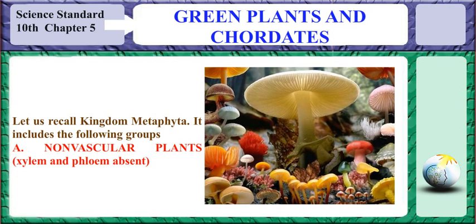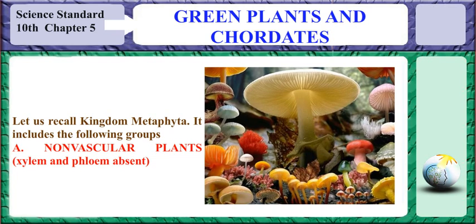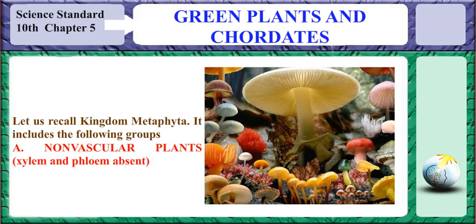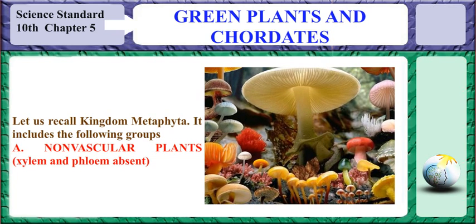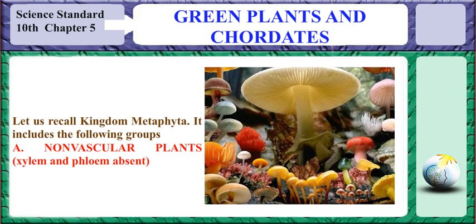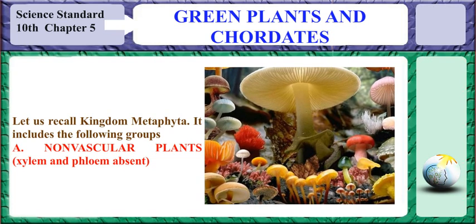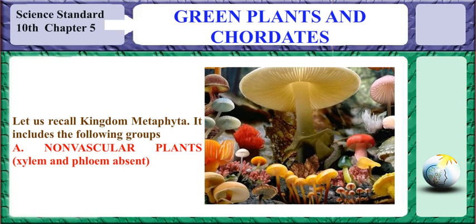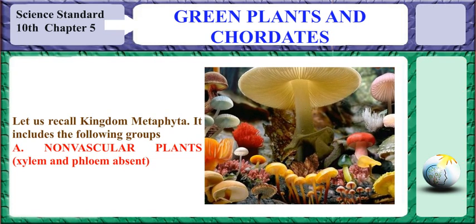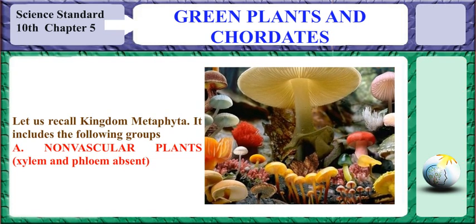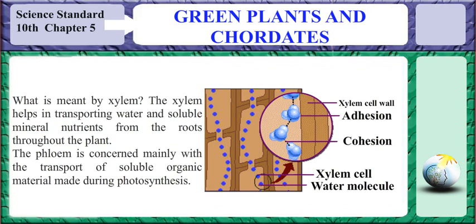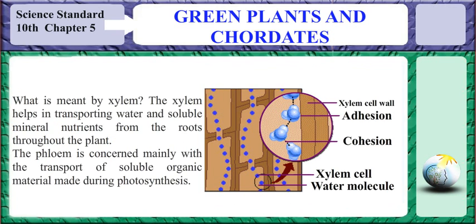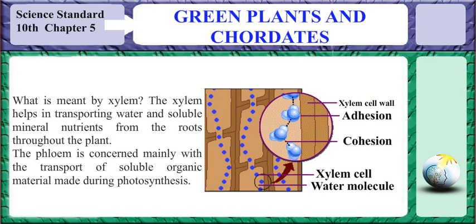It includes the following groups: non-vascular plants and vascular plants. Non-vascular plants are those in which the xylem and the phloem are absent. The xylem helps in transporting water and soluble mineral nutrients from the roots throughout the plant.